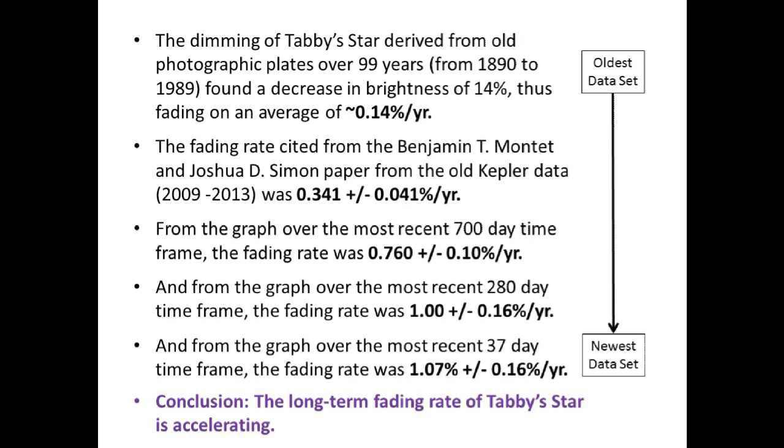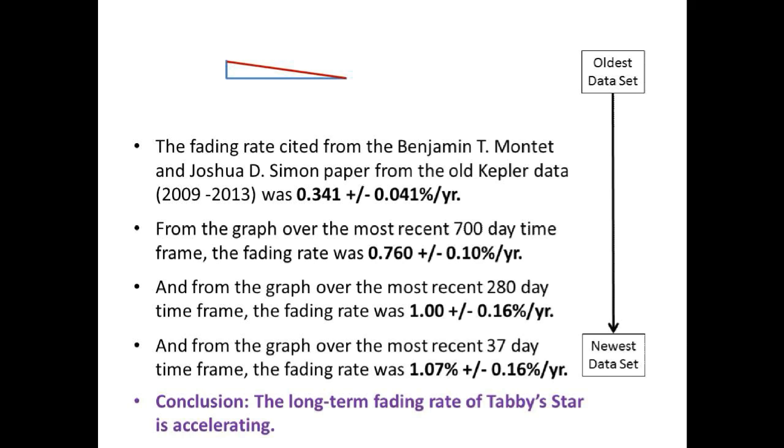The first and oldest long-term dimming measurements of Tabby's Star were derived from old photographic plates across a 99-year period. The long-term dimming rate was averaged from this data at 0.14% per year. So let's represent this slope by a red line. The vertical and horizontal lines represent the rise and run respectively.